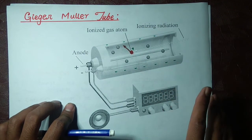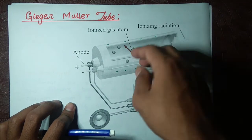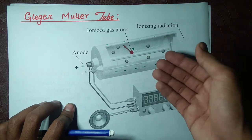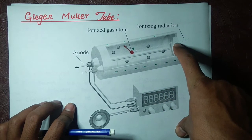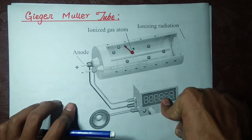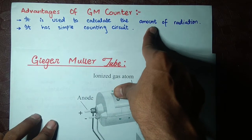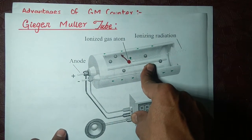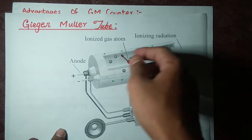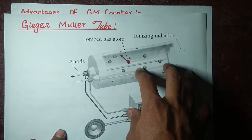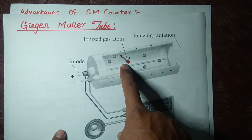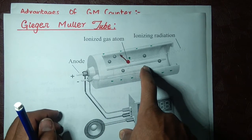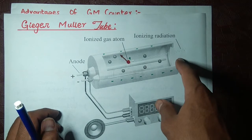One radiation comes and generates one pulse; another radiation comes and generates another pulse. Two radiations give two pulses — whether they involve two electrons, ten electrons, or five electrons. We cannot know how many electrons are involved. We can only calculate the number of radiation events from the pulses, but not the type. If gamma makes a pulse from 10 electrons and beta makes a pulse from 20 electrons, both give one pulse each — we cannot distinguish between them.